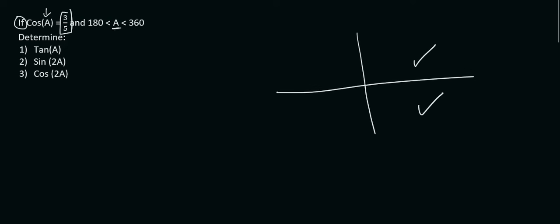But then they tell us that this angle is bigger than 180 and smaller than 360, which is here and here. So clearly, quadrant number 4 satisfies both conditions, and so we will draw our triangle in that quadrant.